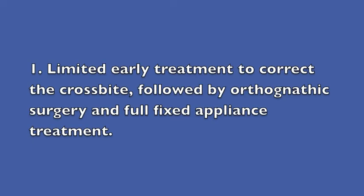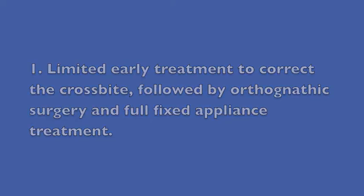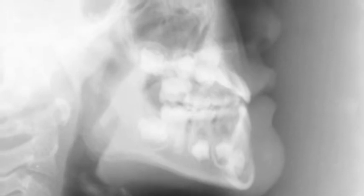So what are your treatment options? Option number one: limited early orthodontic treatment to correct the posterior crossbite, followed by orthognathic surgery later when growth is completed. At that time, full fixed appliances will be used to decompensate all teeth until ideally positioned to allow for a surgical resolution of the malocclusion. Growth will be closely monitored with periodic head films to determine when the second phase of treatment could be safely initiated.